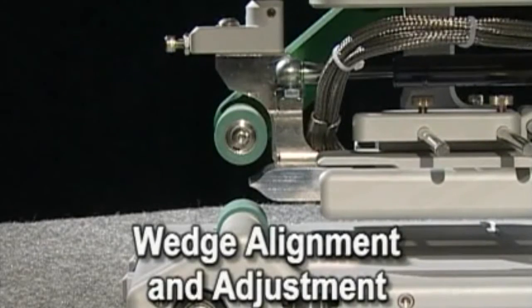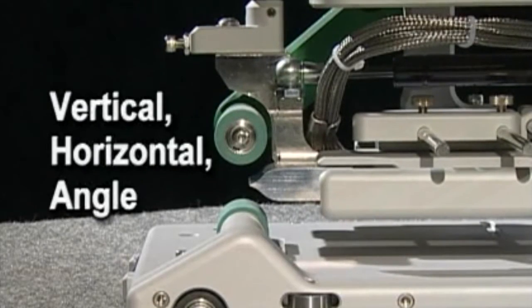There are three alignments for the triad wedge: vertical, horizontal, and angle.